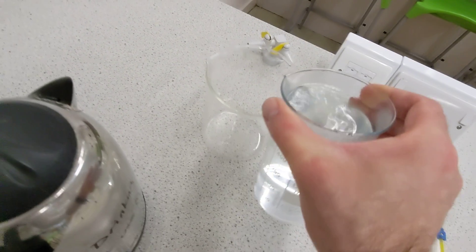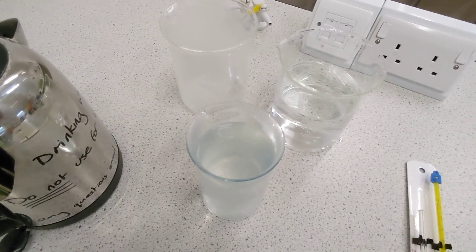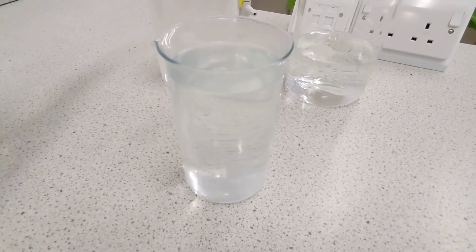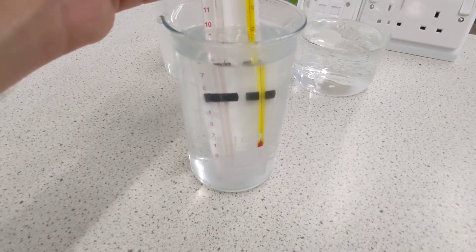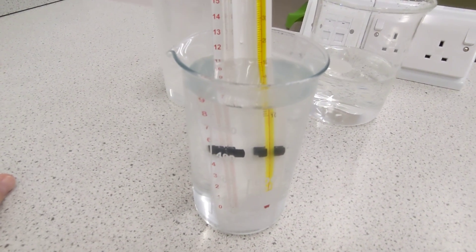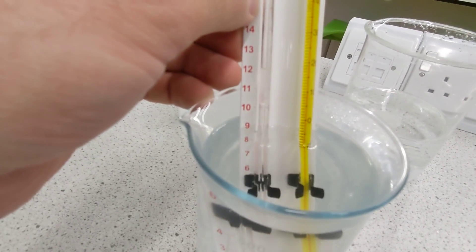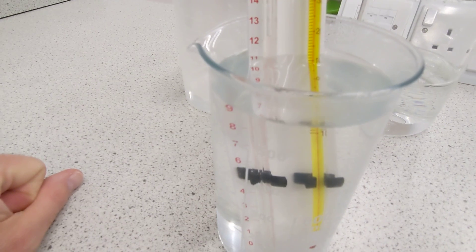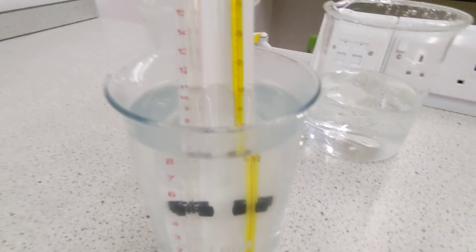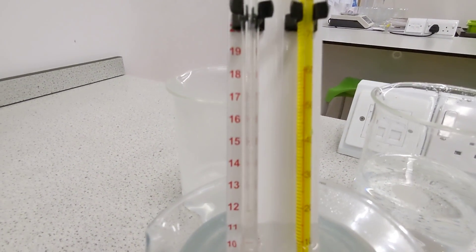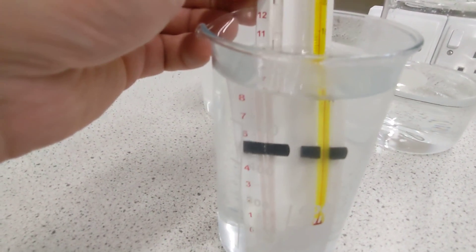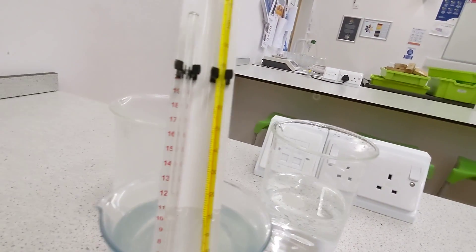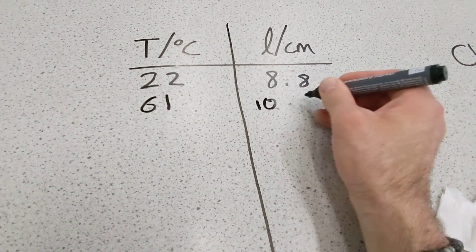Let's empty some of the boiling water and add some cold water. This water is still hot but not so hot that I can't put my finger in it — though that's not a safe way of checking temperature. The column of air is increasing in volume; I can see the capillary meniscus moving. The temperature of the water is showing at 61 degrees. Lifting this out to measure: 10.5 centimeters. So at 61 degrees, the column is 10.5 centimeters.